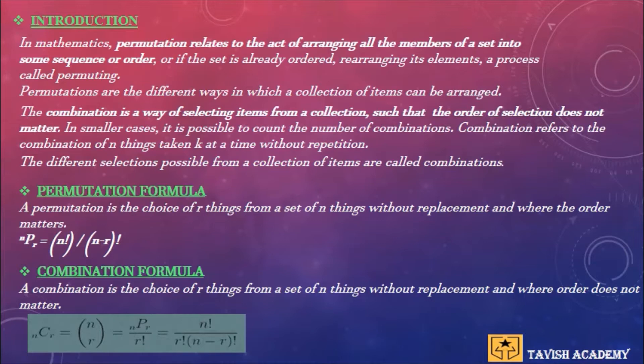Therefore, permutation is the different ways in which a collection of items can be arranged. Combination is a way of selecting items from a collection such that the order of selection does not matter.